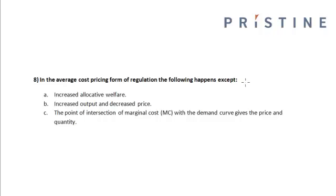In the average cost pricing form of regulation, the following happens: increased allocative welfare, increased output, and decreased price. The point of intersection of the marginal cost curve with the demand curve gives the price and the quantity.